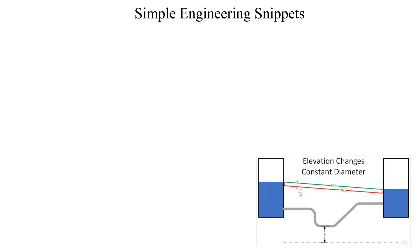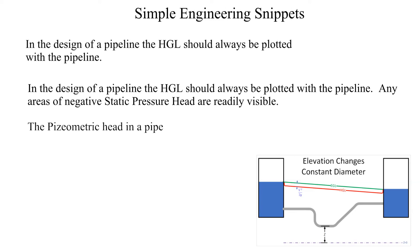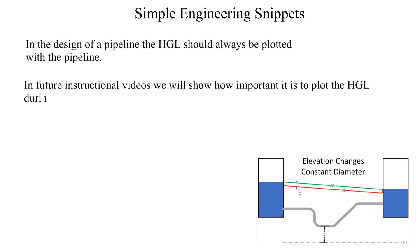It is always important to plot the hydraulic grade line with the pipeline. However, since the velocity head is often two to three orders of magnitude less than the piezometric head, the energy grade line may not be plotted along with the hydraulic grade line and the pipeline. In future instructional videos we will investigate examples of how plotting the hydraulic grade line can quickly indicate a flawed design.